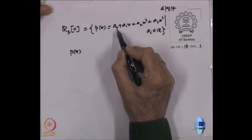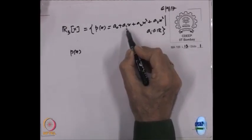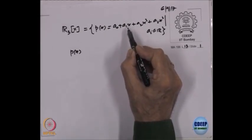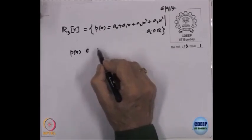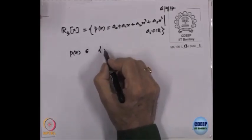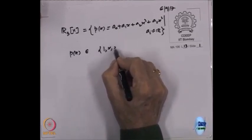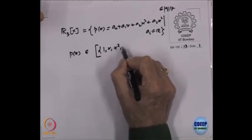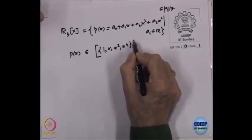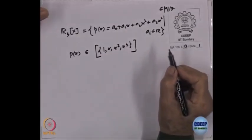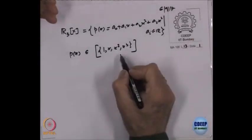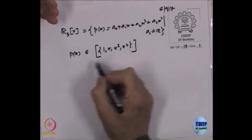P(x) is a₀ multiplied by 1, plus a₁ multiplied by x — if you treat x as a polynomial of degree 1 — so P(x) belongs to the span of {1, x, x², x³}. Because that is the way we write polynomials. So P(x) belongs to this span.